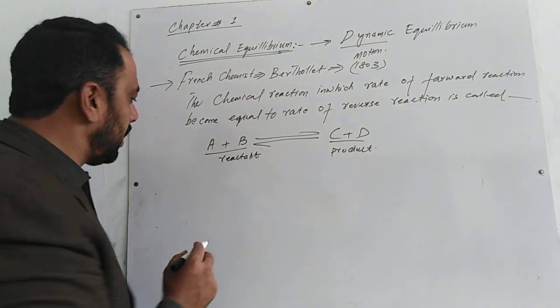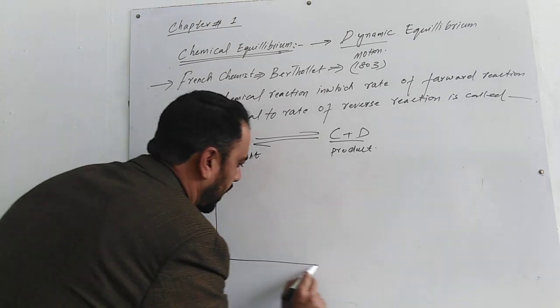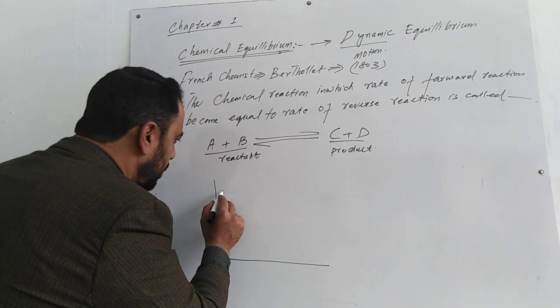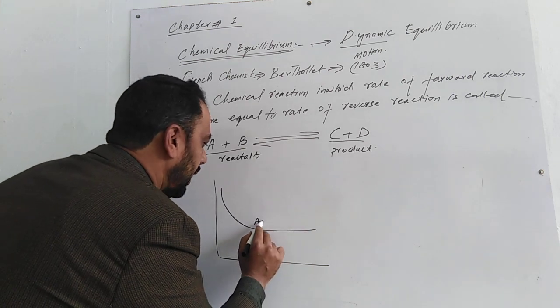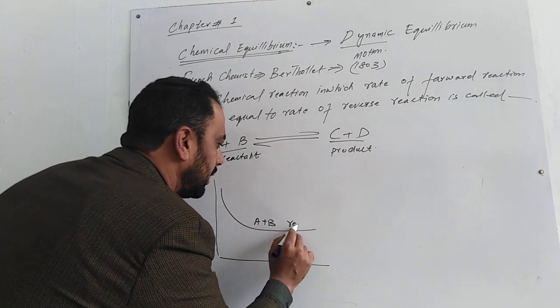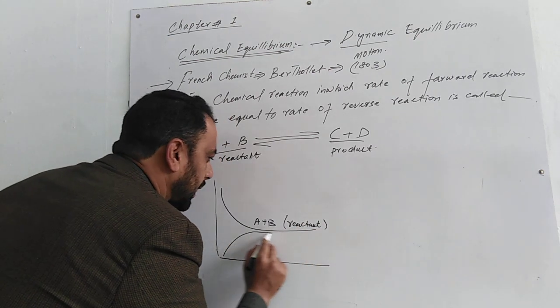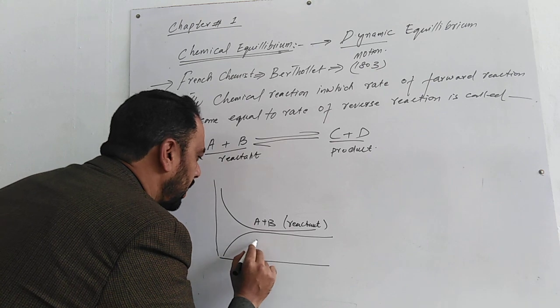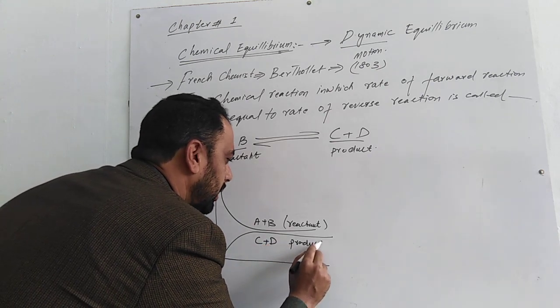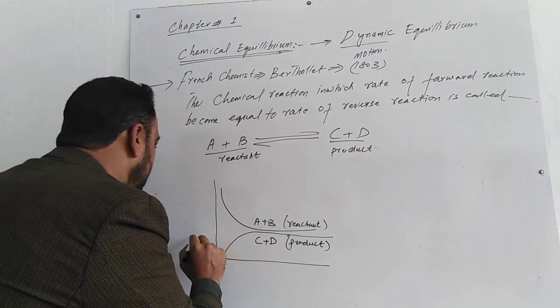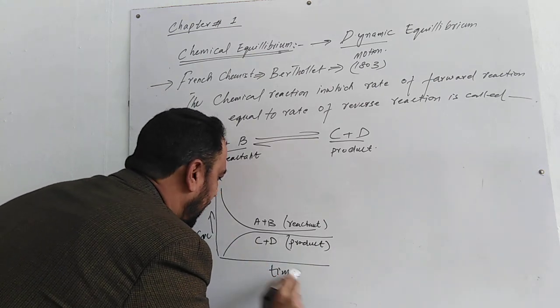If I represent this graphically, the concentration of reactants (A plus B) will decrease, and the concentration of products (C plus D) will increase. This is concentration versus time.